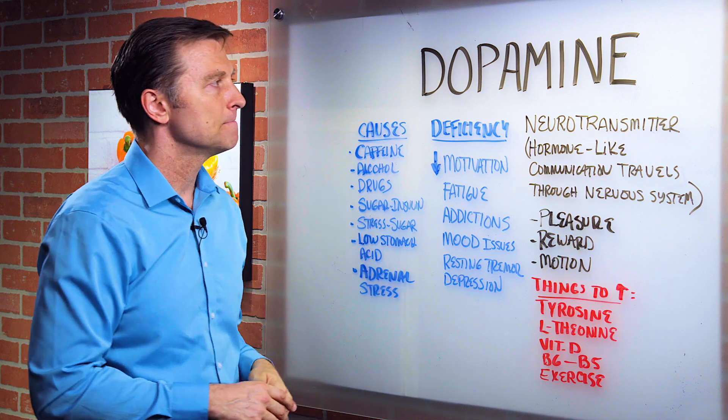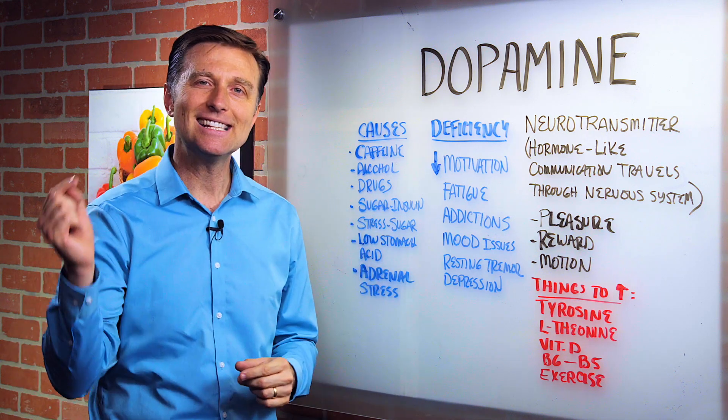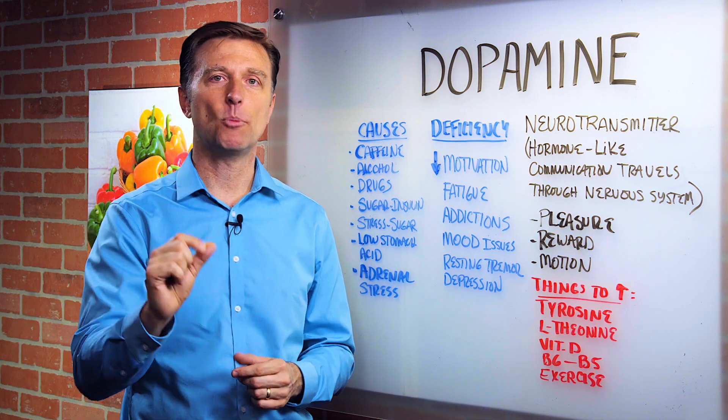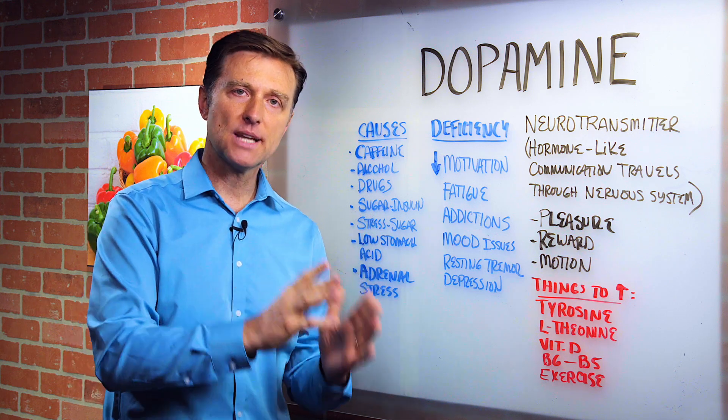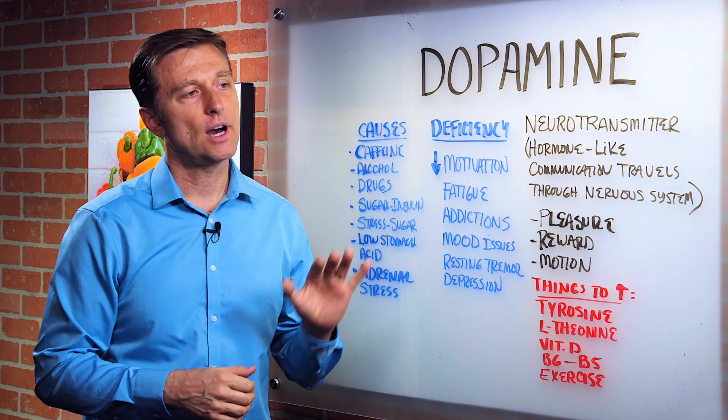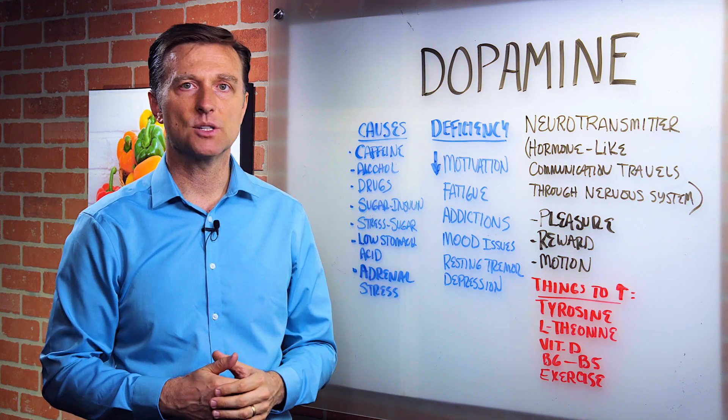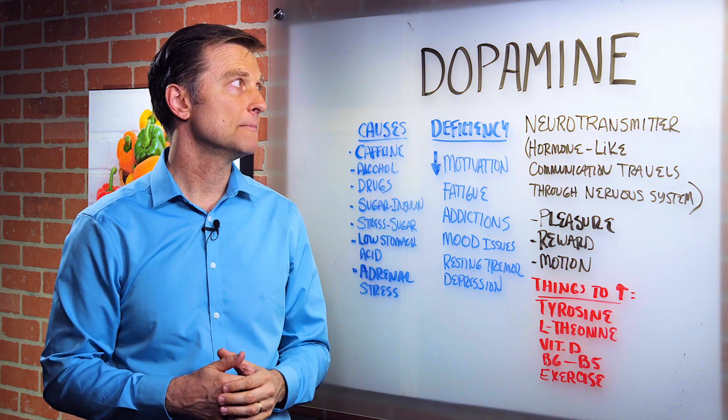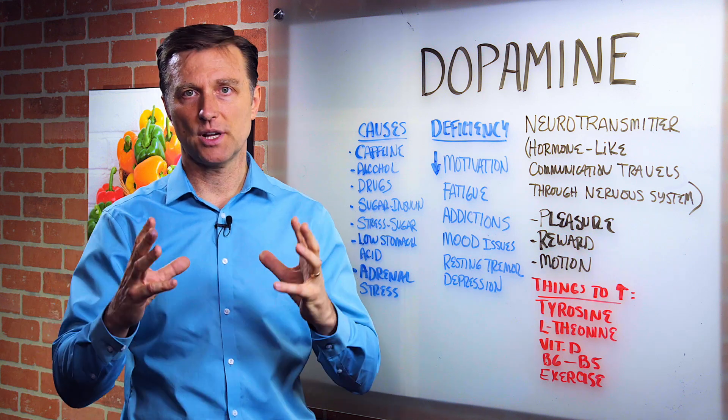Then we have adrenal stress. The adrenal gland, the inside of the adrenal gland, makes dopamine. So if your adrenals are burnt out or exhausted, you're not going to make the level of dopamine. So chronic stress, all these things deplete your neurotransmitters. Not just dopamine deficiencies, but all the neurotransmitter deficiencies.